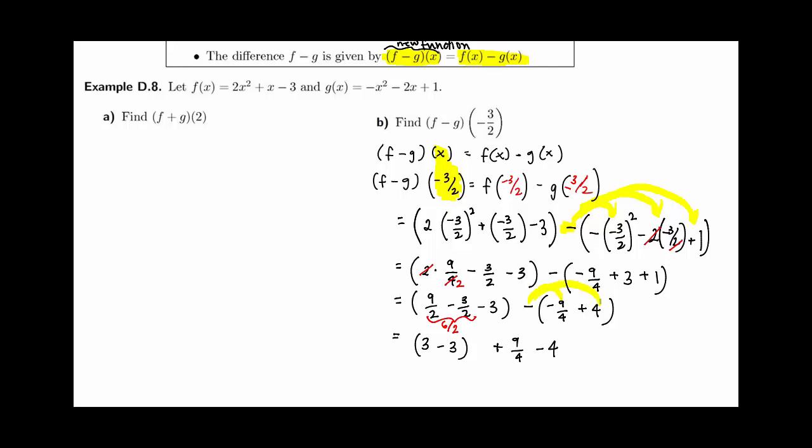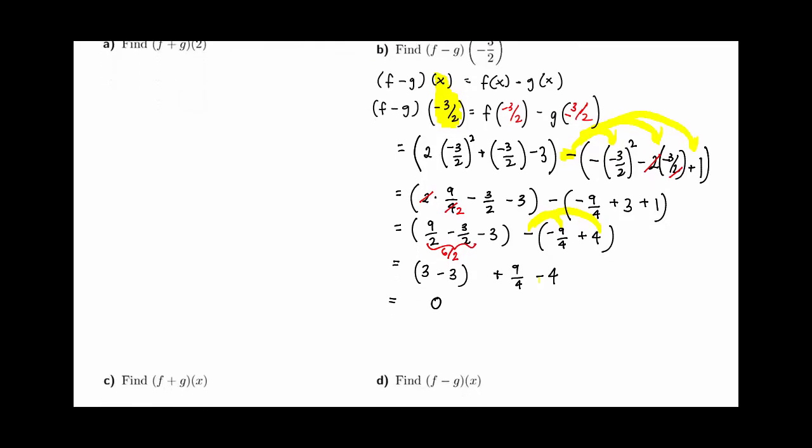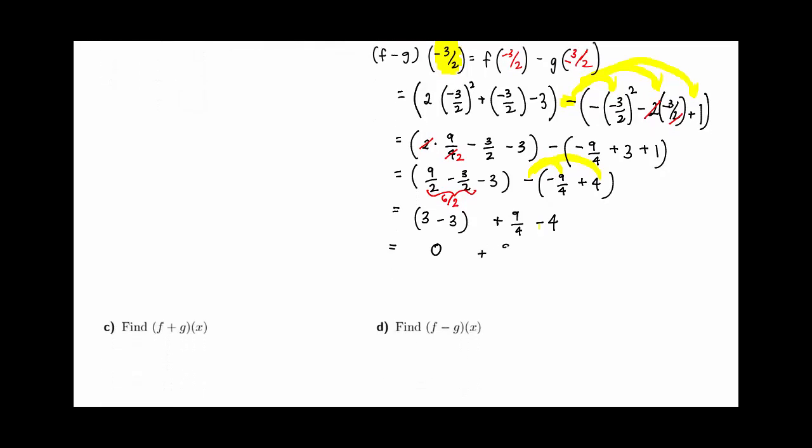If I distribute that negative to each term in the parentheses, 3 minus 3 is 0, so we won't worry about that much. I get 9 fourths minus 4, but if I put 4 over 1, I can get a common denominator of 4, so it'll be minus 16 fourths, which is really just 9 minus 16, which is negative 7, keep the denominator the same, 4. So f minus g of negative 3 halves is negative 7 fourths.